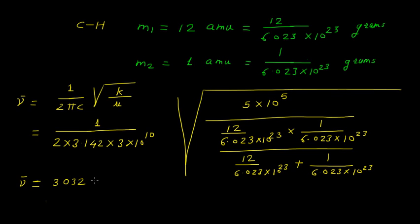By calculating this we get 3032 centimeter inverse. But if you see the actual range of carbon-hydrogen, the actual range is 2850 to 3000 centimeter inverse.